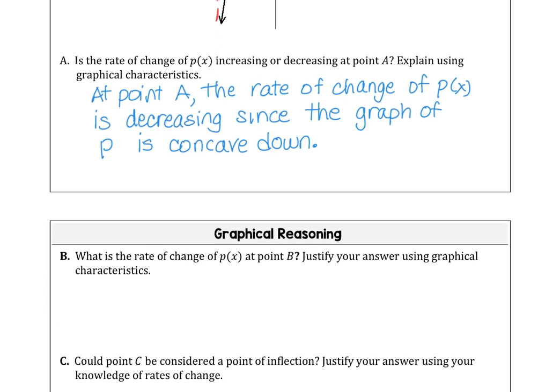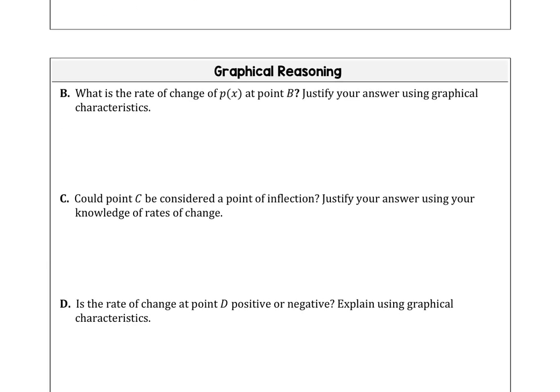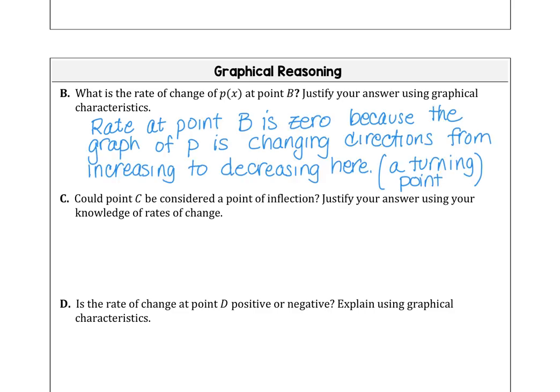For part B, what is the rate of change of P(x) at point B? The rate of change at point B is zero because the graph of P is changing directions from increasing to decreasing — this is a turning point.